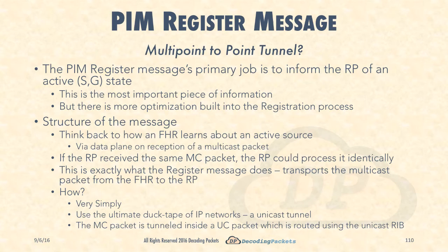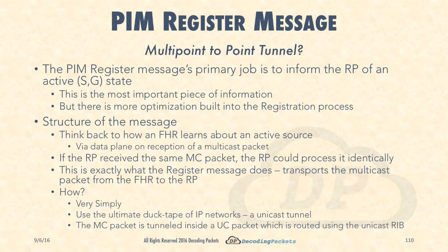The PIM register message's primary job is to inform the RP of a multicast network about an active S comma G state. So you have a source that is sending a multicast stream — that's your S comma G state. The PIM register message is going to carry the information about that state from a first hop router, which is automatically aware through source signaling, to the RP so the rest of the network can now be aware of this S comma G state.